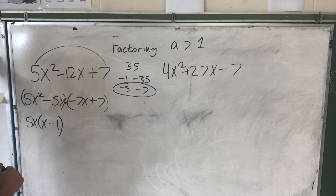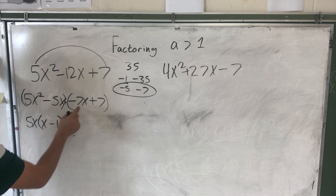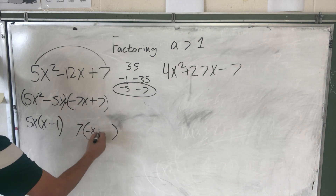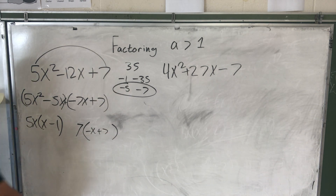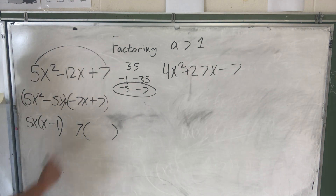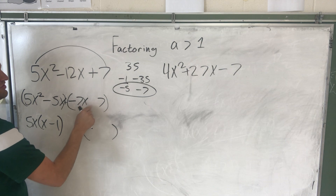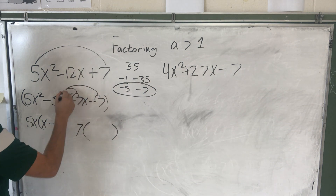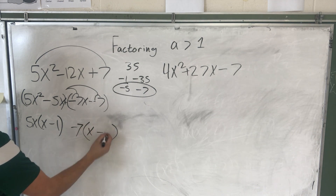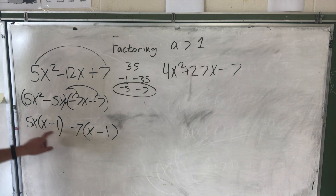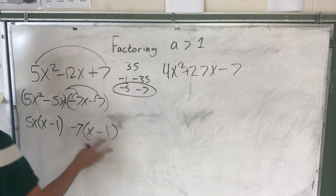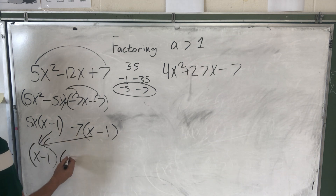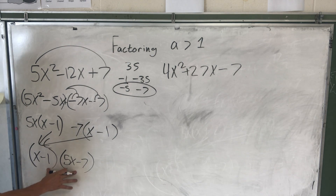From the second group, we need to get x minus 1 as well. If I just factor out a 7, I get negative x plus 7 — not the same. So instead, I'll change the positive to two negatives, since two negatives make a positive. Now I can factor out negative 7, leaving x minus 1. Both groups give x minus 1, so we factored correctly. The final answer is (x minus 1)(5x minus 7).